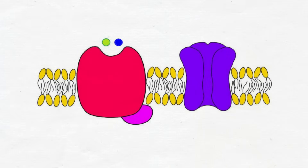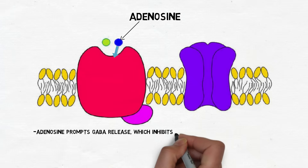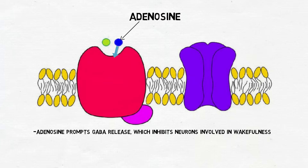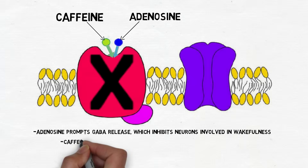How exactly the antagonism of the adenosine receptor translates into the effects of caffeine is not completely clear. Research suggests, however, that adenosine receptors are involved in promoting and regulating sleep. One way this is thought to occur is that adenosine activity can prompt the release of the neurotransmitter GABA, which then inhibits neurons involved in arousal and wakefulness. This promotes sleep, but when caffeine antagonizes adenosine receptors, it opposes this action and causes arousal.